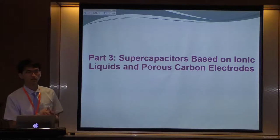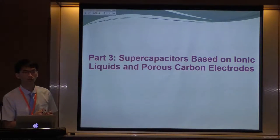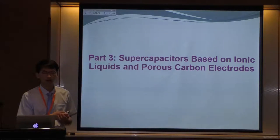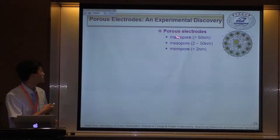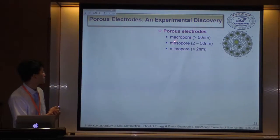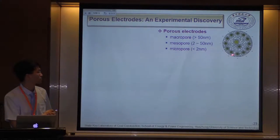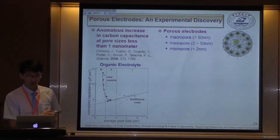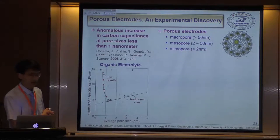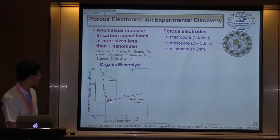In most practical cases, the electrode used is a porous carbon electrode. In part three, I talk about the relation between capacitance and pore size. Pores are defined and categorized into mesopores and micropores based on pore size. In 2006, a milestone paper published in Science reported an anomalous increase in carbon capacitance for pore sizes less than 1 nanometer.